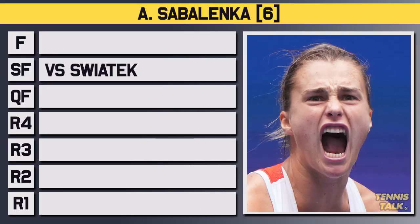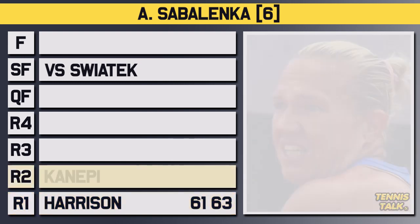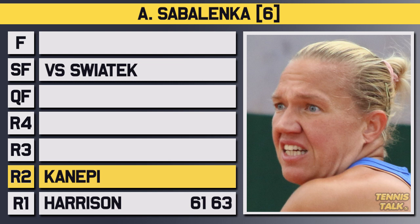Sabalenka came in as the number six seed and took on qualifier Harrison in the first round, winning easily in straight sets 6-1, 6-3. In the second round, she'd take on Kai Kanepi, the boogie woman of the WTA, a very dangerous unseeded player, and after dropping the first set, Sabalenka had to save match points, coming back from 5-1 in the second to eventually get through in three sets, 2-6, 7-6, 6-4.